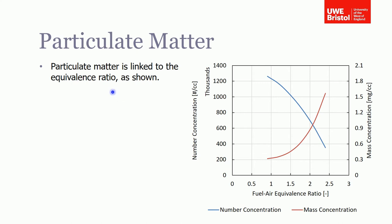Particulate matter, as I said, is quite complex and it's linked to many of the parameters of the combustion system, and one thing is the equivalence ratio. What this graph shows is the variation with equivalence ratio of the particulate mass, which is the red line, and the number of particulates - the number concentration.